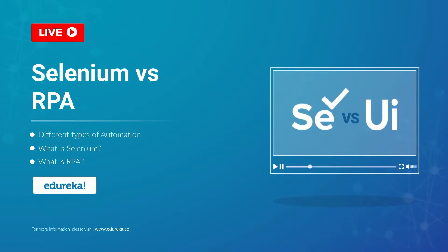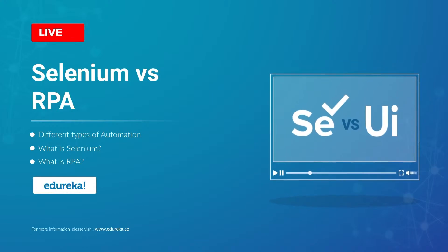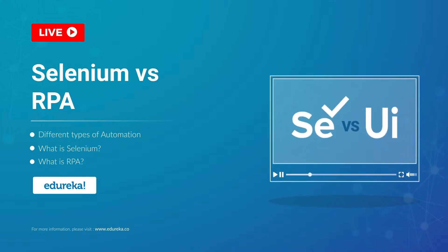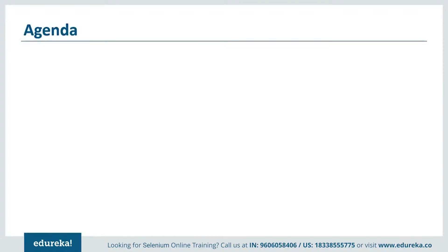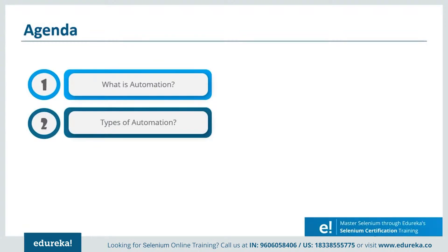You might wonder why are they of such great importance. Stick on to this video to find out what exactly are their features and how they differ from each other based on certain parameters. First, let's start by understanding what is automation and take a real-time example, then discuss the different types of automation, and get a brief introduction to automation testing and business process automation.